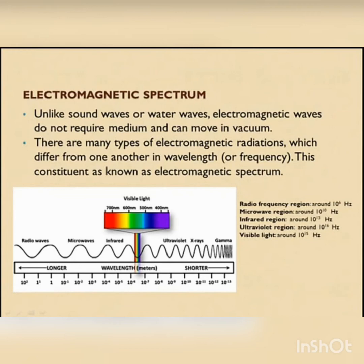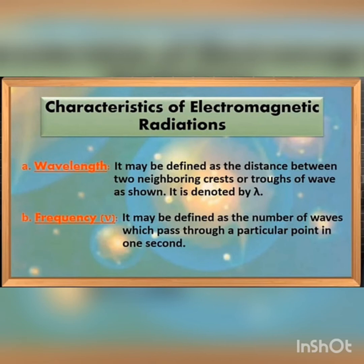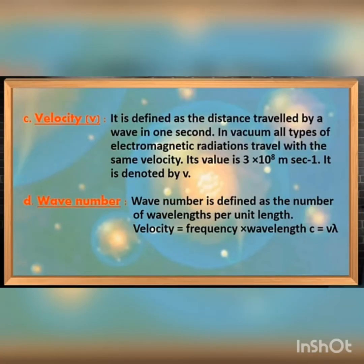A small portion around 10 raised to power 15 hertz is visible. The characteristics of electromagnetic radiations are: wavelength, defined as the distance between two neighboring crests or troughs of the wave; frequency (nu), defined as the number of waves passing through a given point in one second; velocity, defined as the distance travelled by the wave in one second; and wave number (nu bar), defined as the number of waves per unit length. The frequency nu, wavelength lambda, and velocity of light C are related by the equation C = nu × lambda.